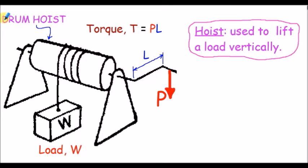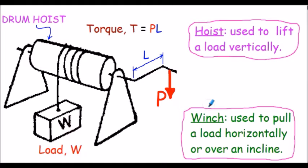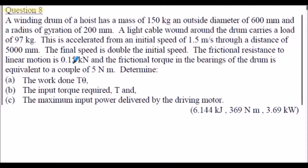An illustration shows a drum hoist raising a load W vertically. Note that a hoist is a device used to lift a load vertically, whereas a winch is a device used to pull a load horizontally or over an incline. Sometimes the terms are used interchangeably, but they are designed for different purposes. The question we are now considering relates to a hoist lifting a load vertically. Question 8: a winding drum of a hoist has a mass of 150 kilograms, an outside diameter of 600 millimeters, and a radius of gyration of 200 millimeters.